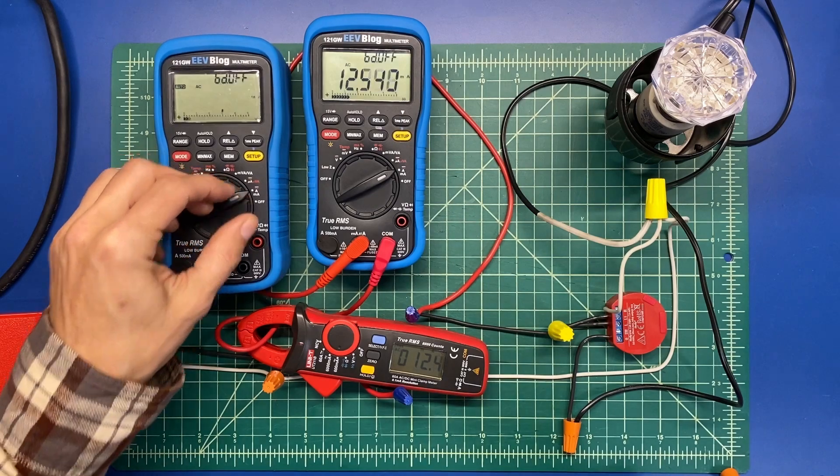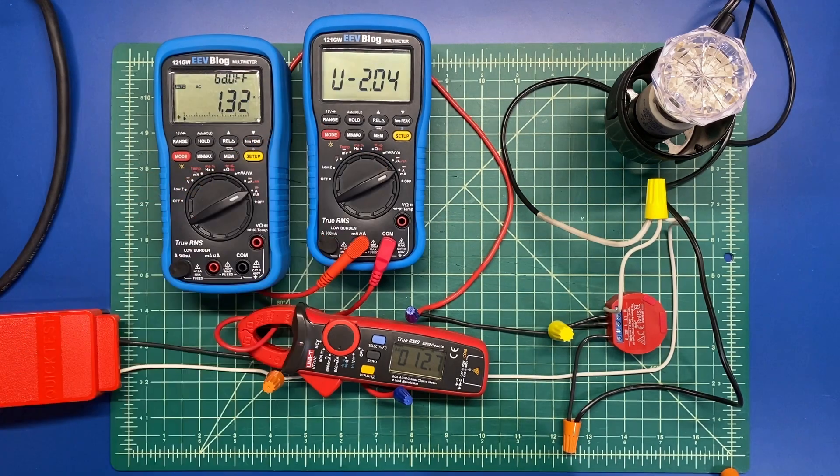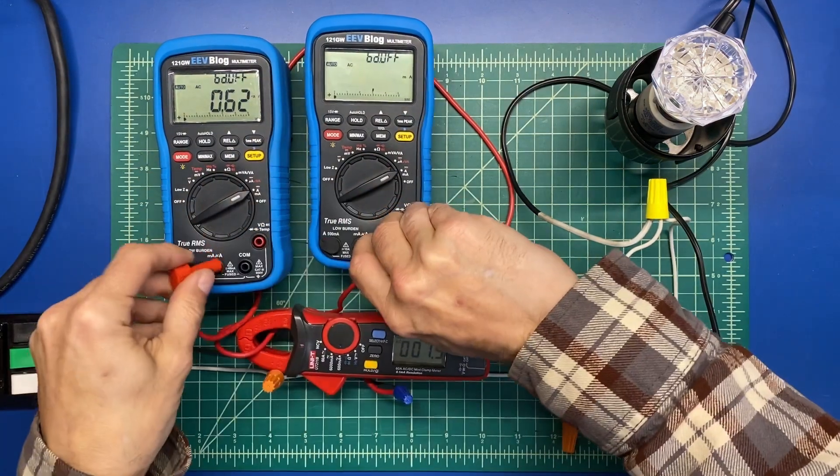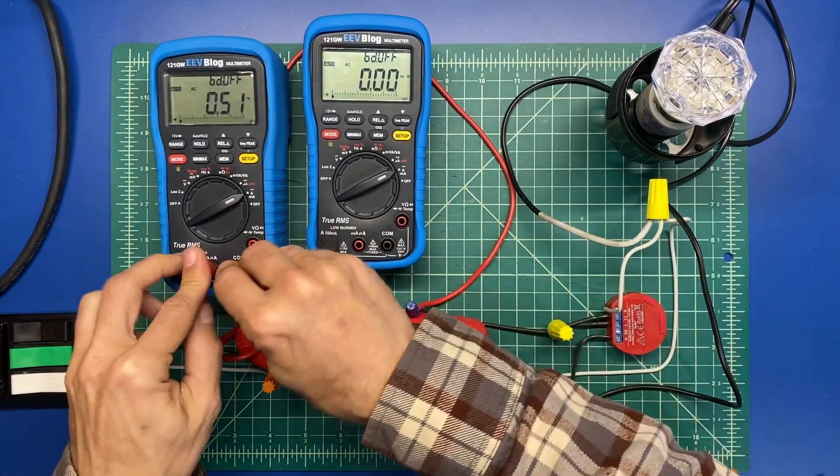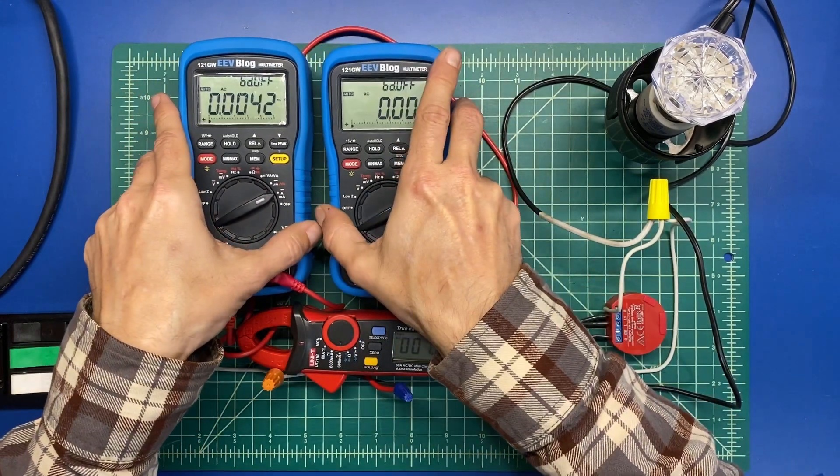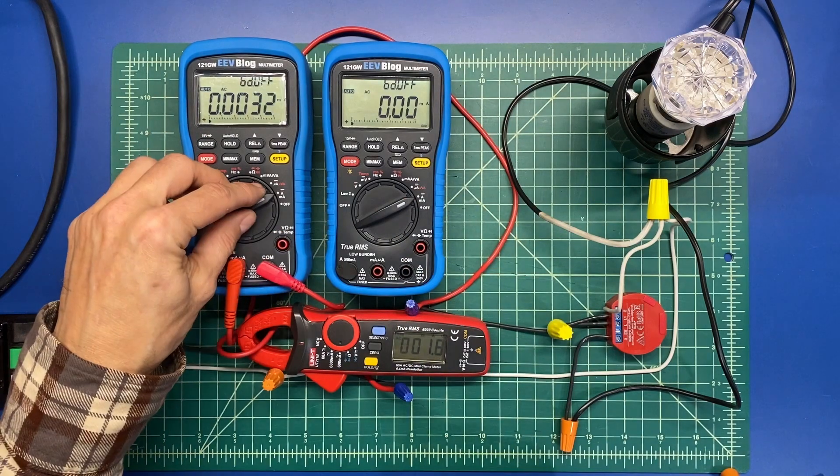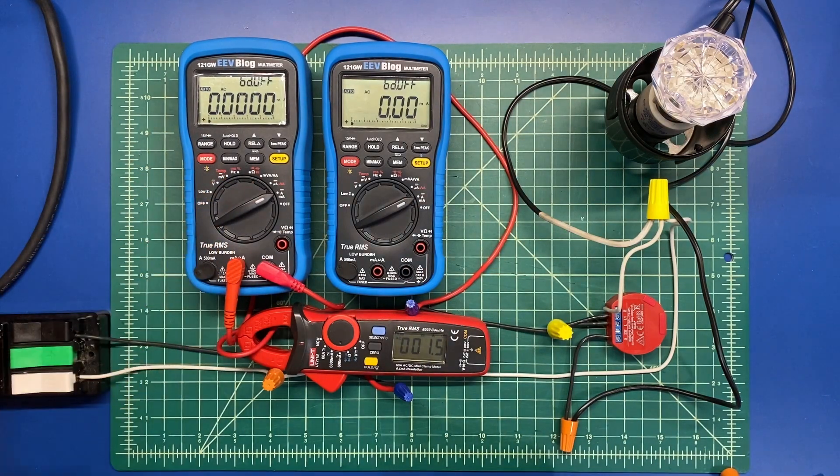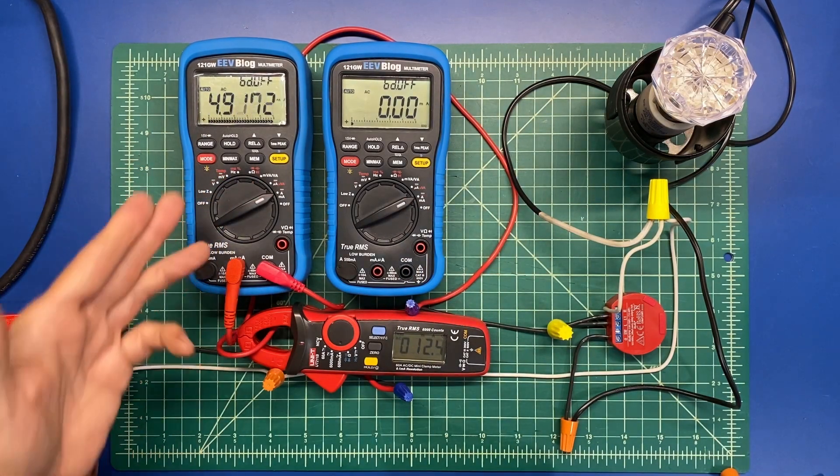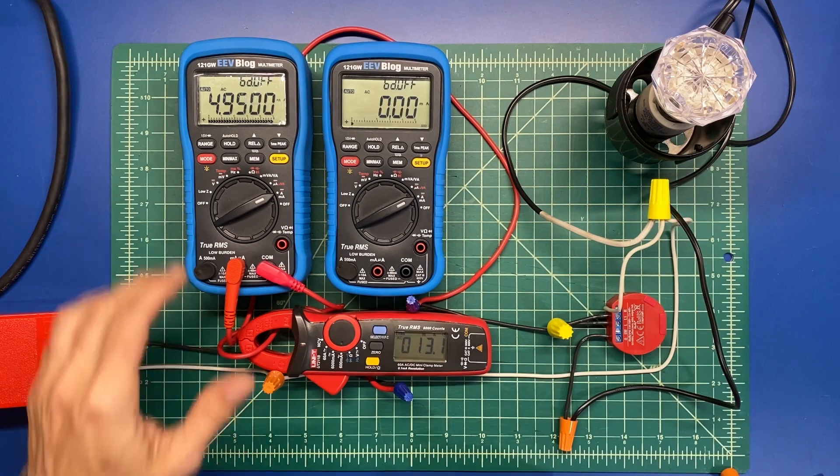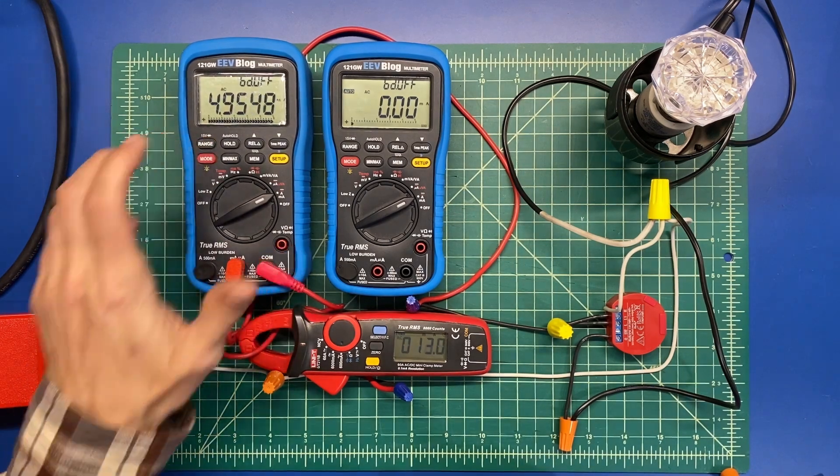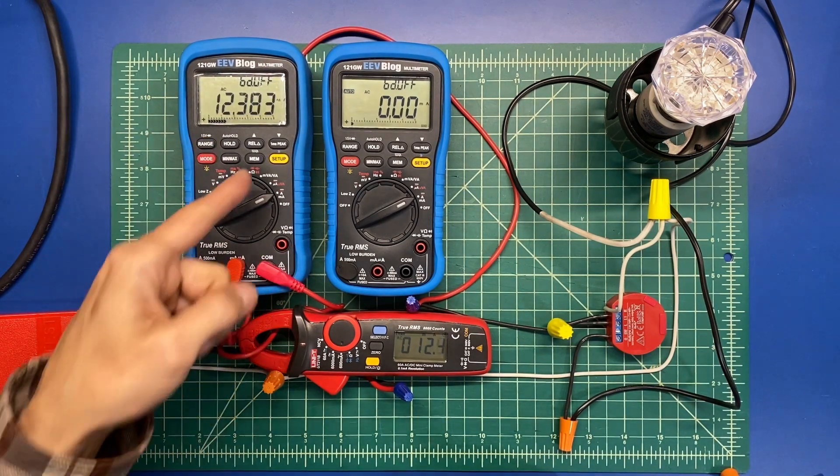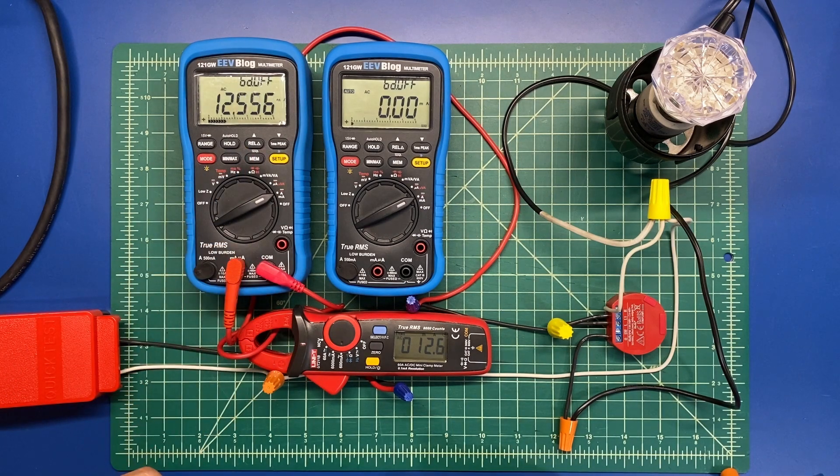Where this one was running 2.04, if I just swap these over and make sure I'm in the right range, you'll see I get the same results. The same auto-ranging issue. If I manually range it, I can get it to show an accurate number.